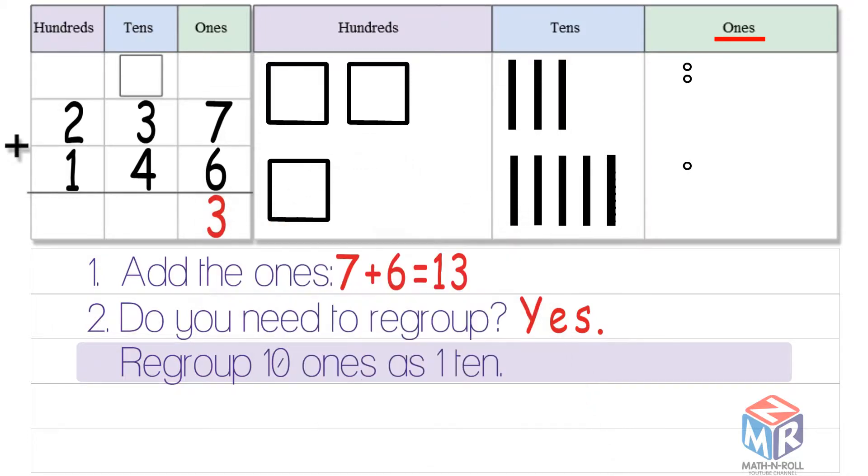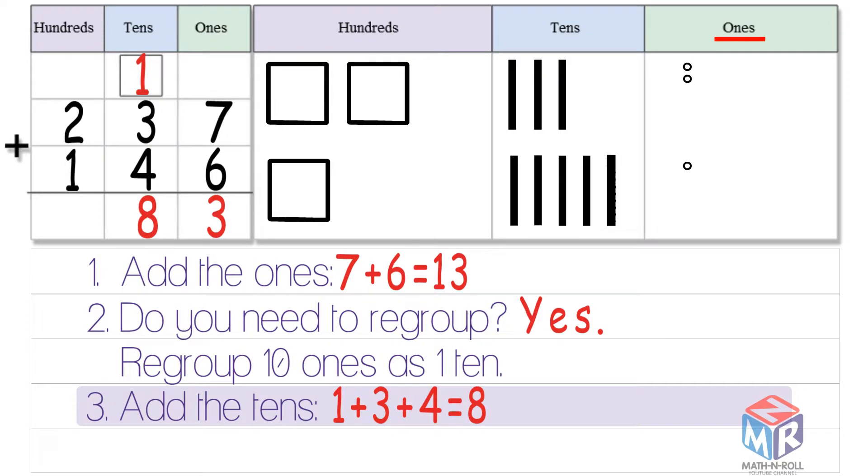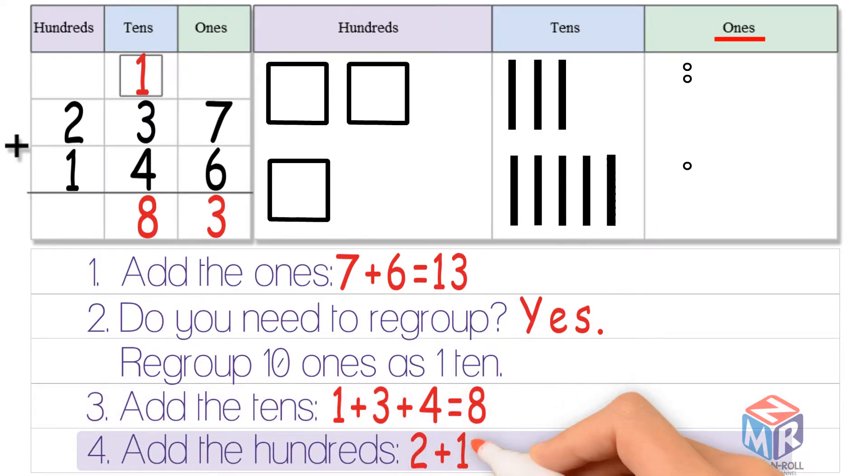Now we have three ones, and another 10, so we add the tens, 1 plus 3 plus 4 is equal to 8. Lastly, you add the hundreds, 2 plus 1 is equal to 3, so 237 plus 146 is equal to 383.